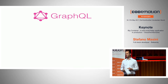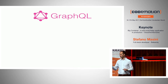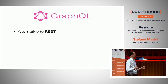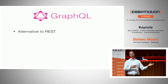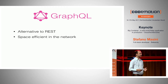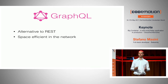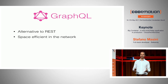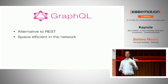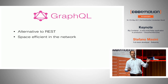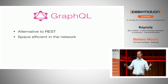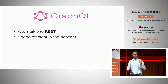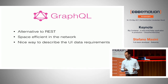GraphQL is, very quick introduction, an alternative to REST. It's a way to get data from the server to the client, just different than REST. It's space efficient on the network because each request describes exactly what the client needs from the server. Instead of hitting an entry point that was designed years ago with different clients in mind carrying all sorts of information, you can specify exactly what you want and that's what you get — nothing more.